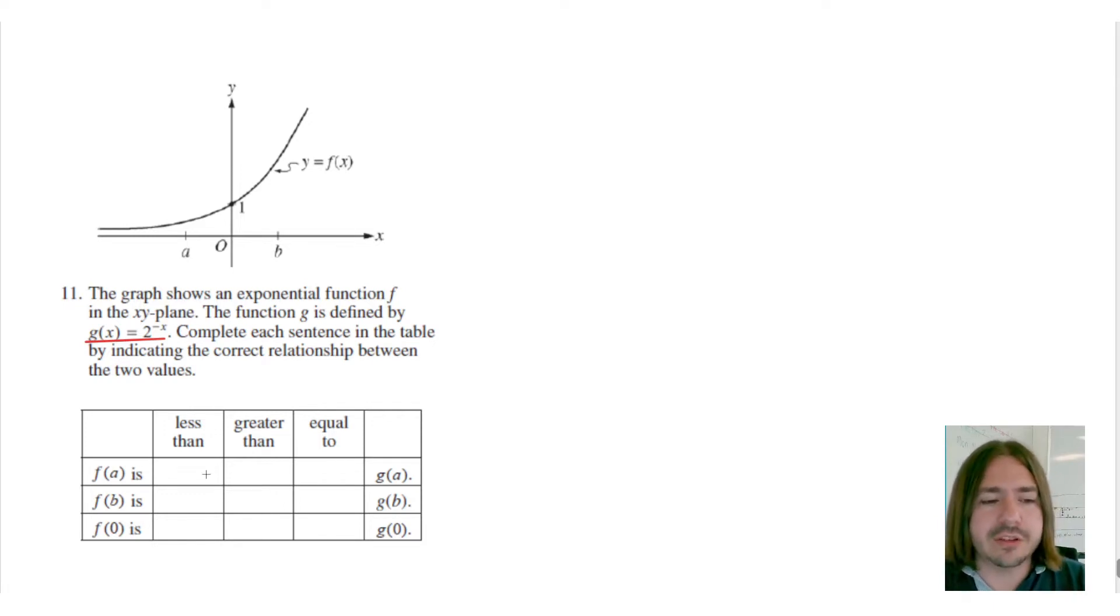In other words, we're trying to compare these two values. So let's start with f of a. So at f of a, you can see a is right here. Now we are not able to say with certainty what the value of f of a is, but we can say that based on this diagram, f of a has got to be less than 1.